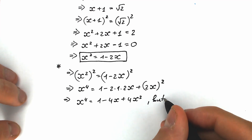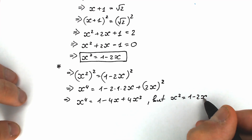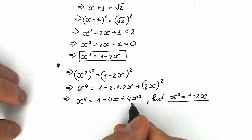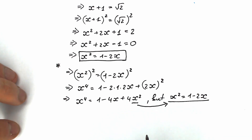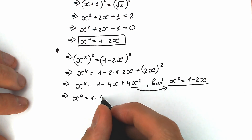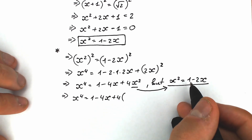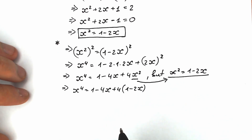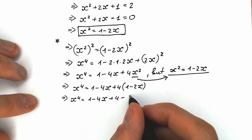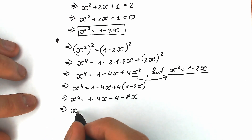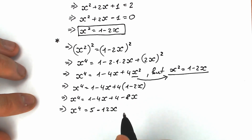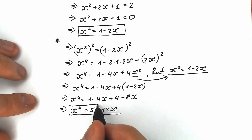But don't forget that x squared is equal to 1 minus 2x. This is an extremely important expression. So instead of x squared, let's plug in 1 minus 2x. As a result, x to the 4th power equals 1 minus 4x plus 4 times (1 minus 2x), which simplifies to 1 minus 4x plus 4 minus 8x. Grouping constants: 1 plus 4 equals 5, and minus 4x minus 8x equals minus 12x. So x to the 4th power equals 5 minus 12x.